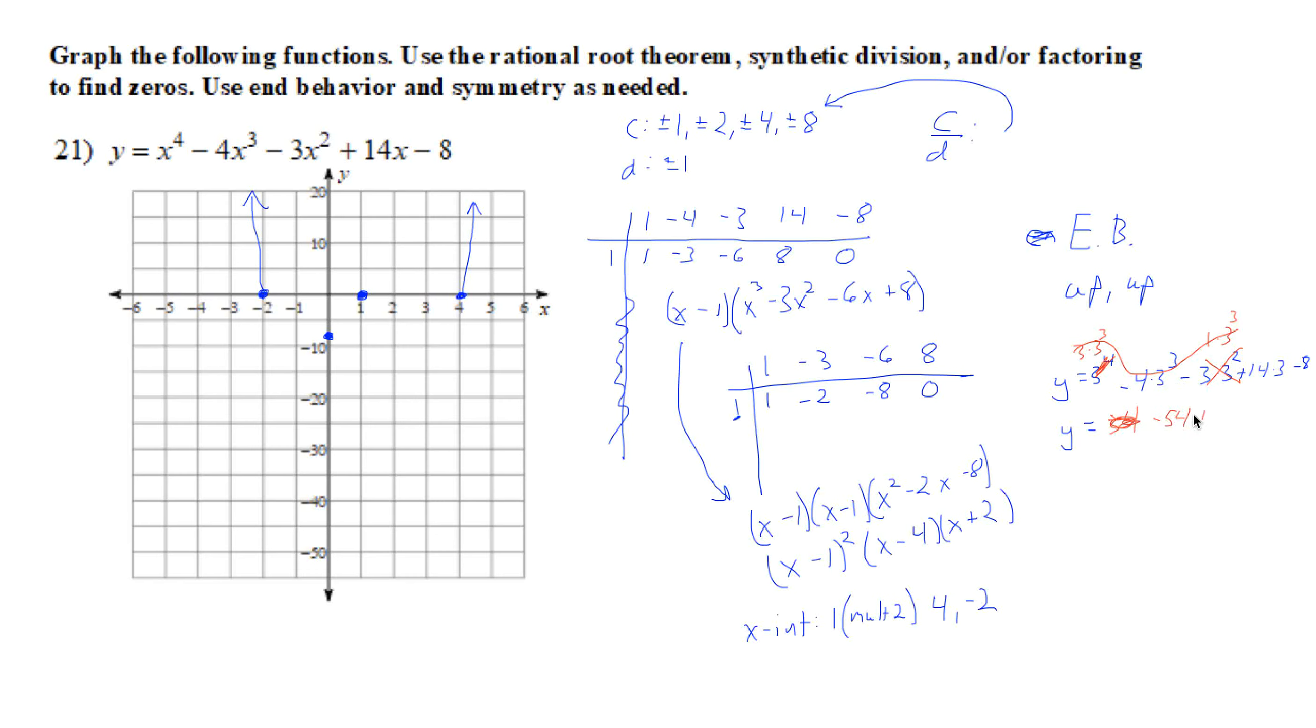Plus 42 minus 8. So together these are negative 62, negative 20. Well, that makes more sense. Negative 20.